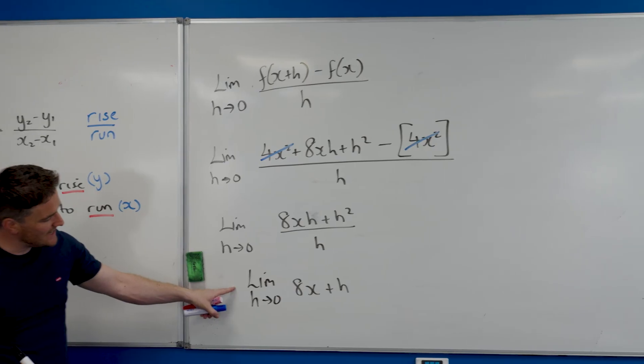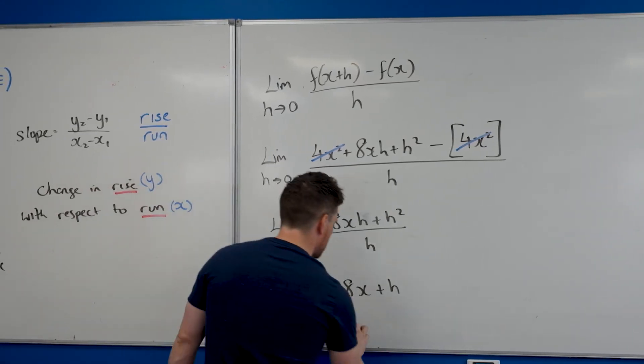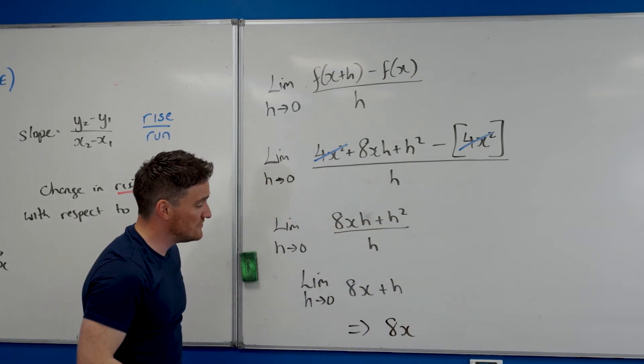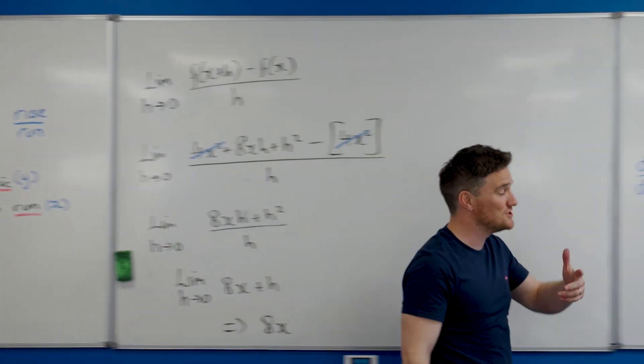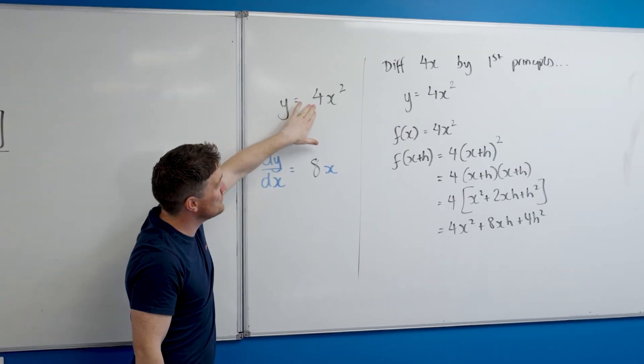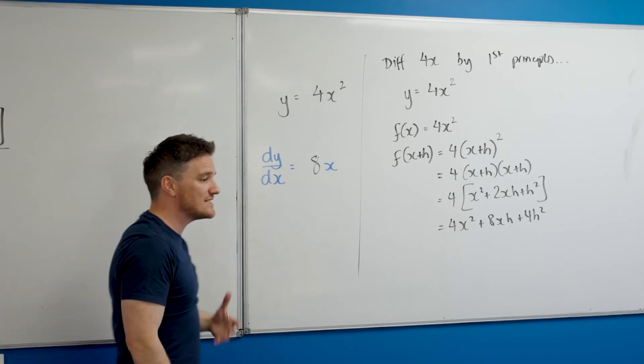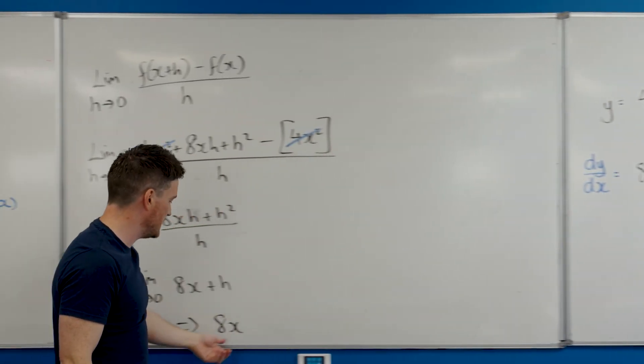I'm going to now let h be zero, so I get my answer to be 8x. Which, if we take a look at my just slightly adjusted question, the question was 4x squared, the answer was 8x.